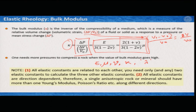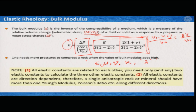We have now learnt Young's modulus, shear modulus, Poisson's ratio, and bulk modulus. Lame's constant we will learn later. All elastic constants are related to each other because you are measuring them from the same material — so out of the five constants, you only need two; if you have two, you can calculate all three others. Most importantly, all elastic constants are direction dependent. When you measure Young's modulus, Poisson's ratio, or shear modulus, you must specify the direction. Therefore, a single anisotropic rock or mineral should have more than one Young's modulus and more than one Poisson's ratio.